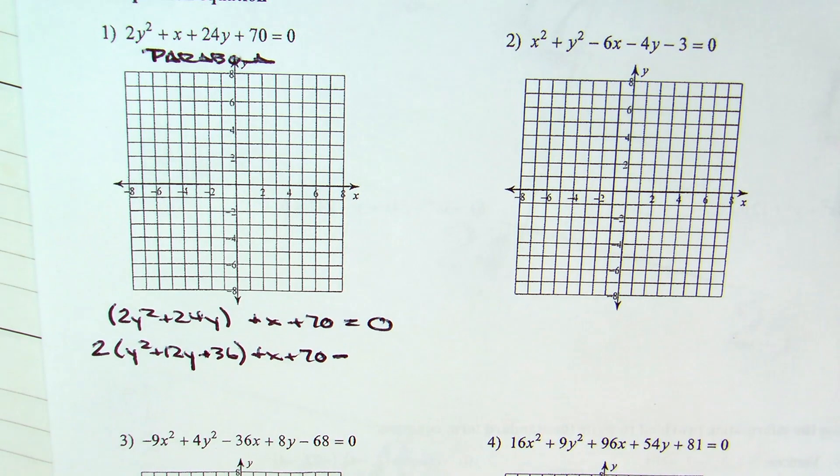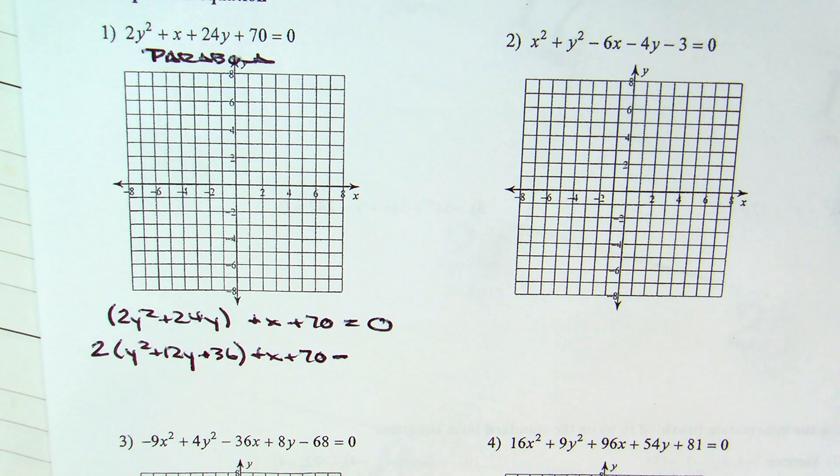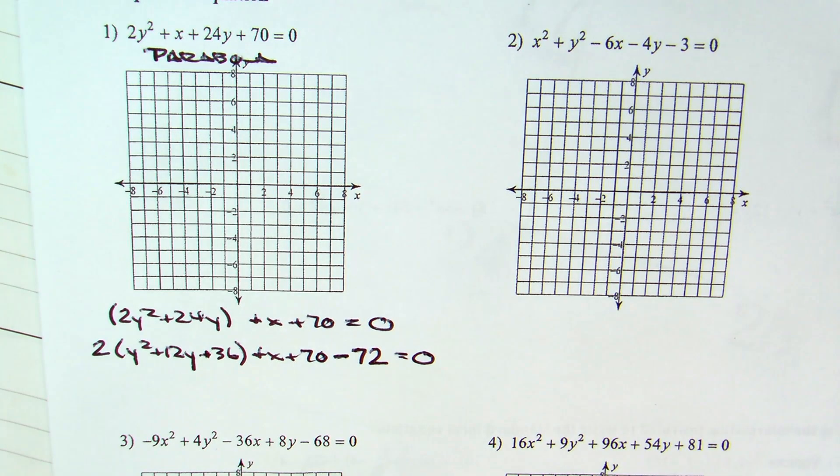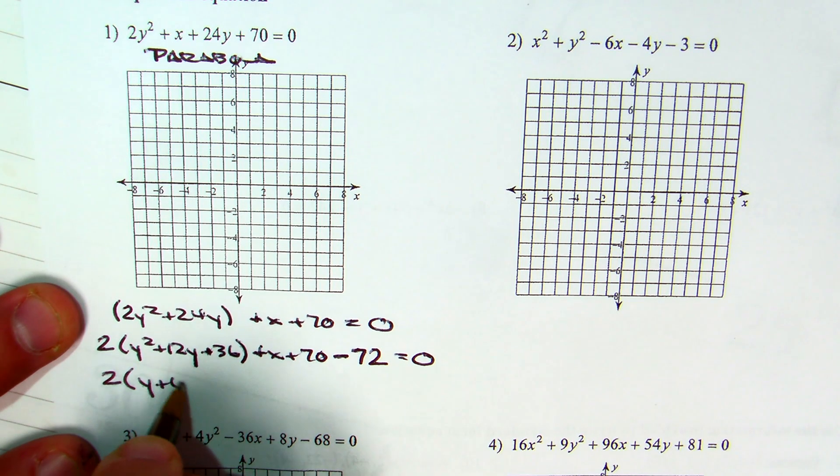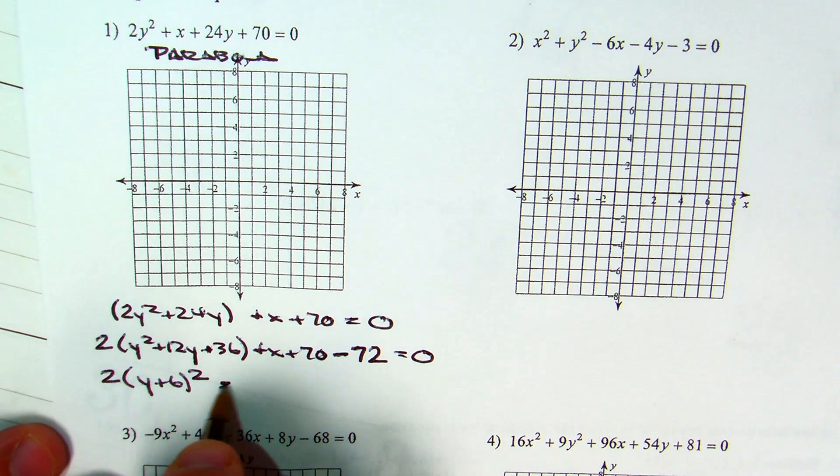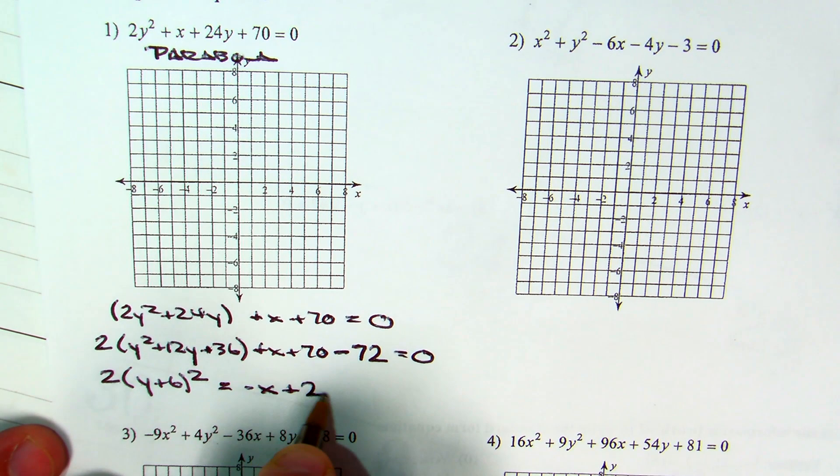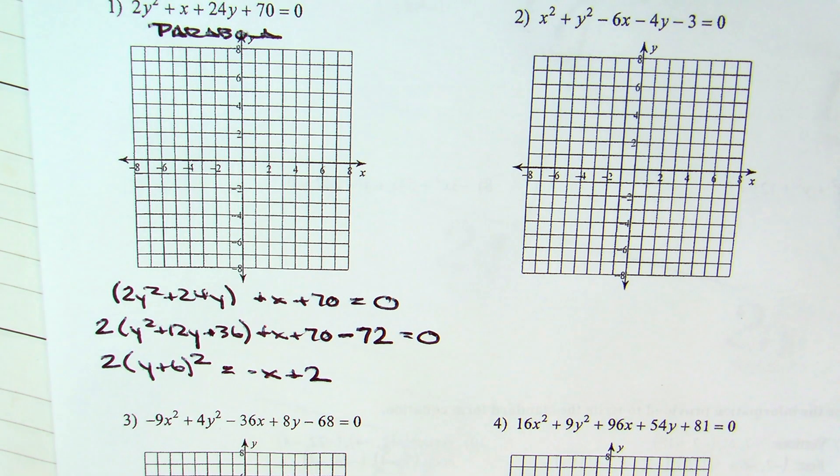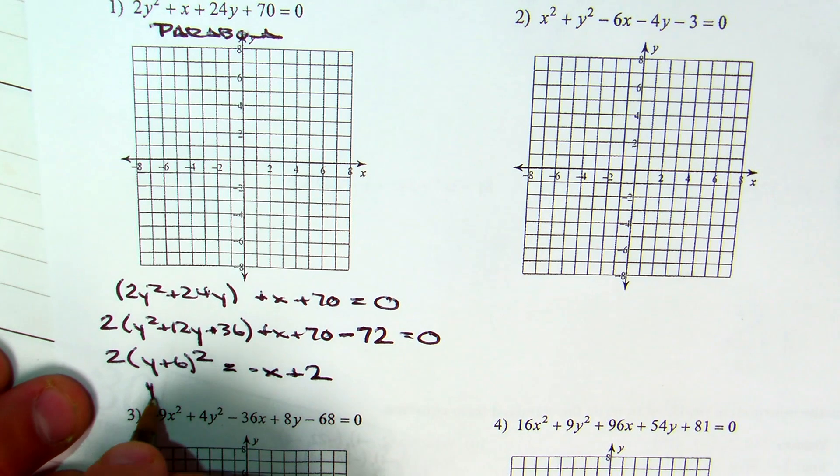What am I then going to subtract outside? Not 36. 36 times what? 2. I'm going to factor. And I'm going to have 2 times y plus 6 squared equals negative x plus 2. That is because 70 minus 72 is negative 2. And when I bring it to the other side, it's plus 2. What's my coefficient of the y? 2. So, I'm going to divide both sides by 2.